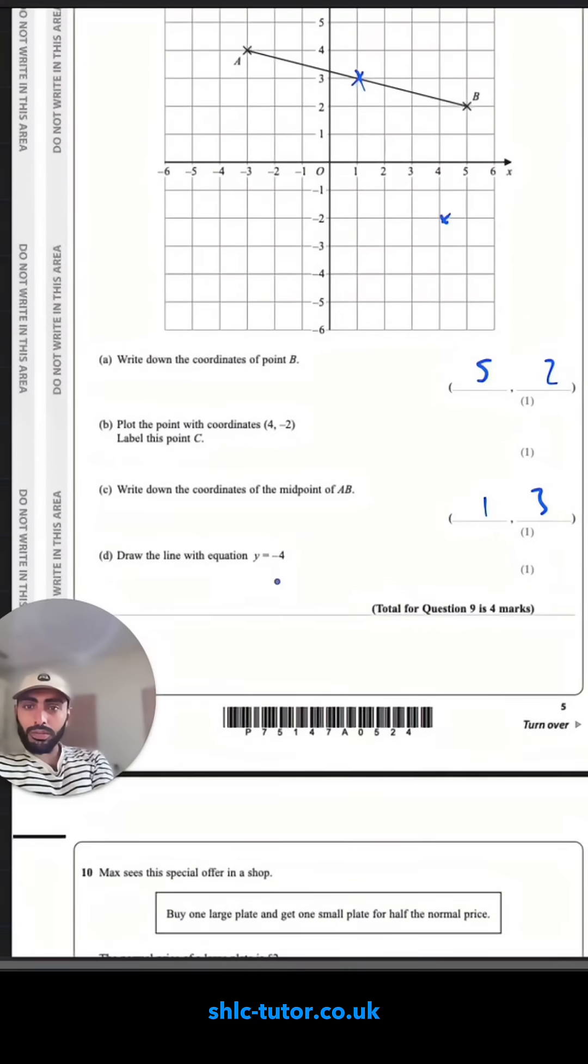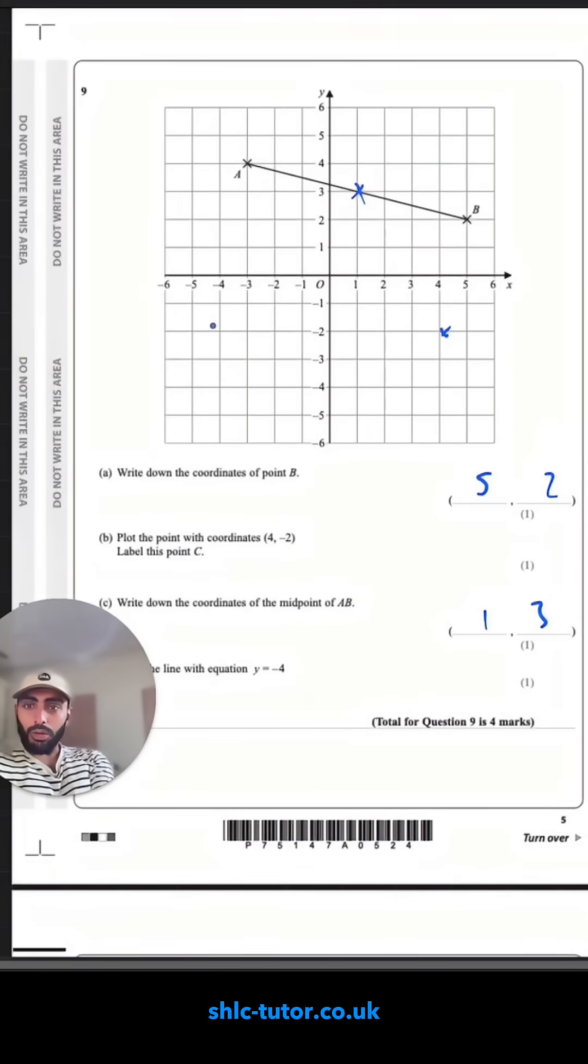Draw the line with equation y equals negative 4. So we're looking for when y is always negative 4. So I go down from y to negative 4. If I draw a straight line going through all those points, all of those coordinates would have y being negative 4. This one would be 0, negative 4. That one would be 1, negative 4, 2, negative 4, and so on.